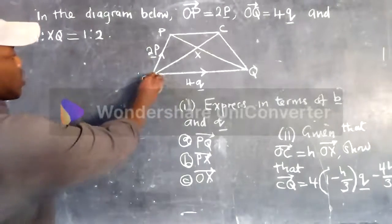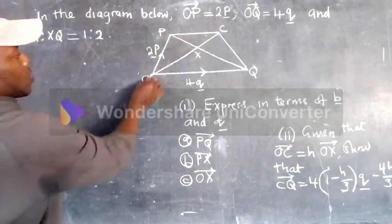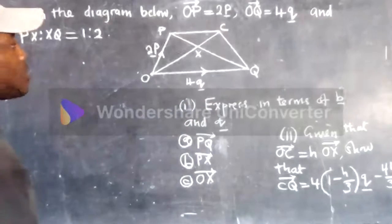Direction, if you can see properly, here the vector is pointing upwards, it's going this way and this way. So if you see proper, the direction is very important.